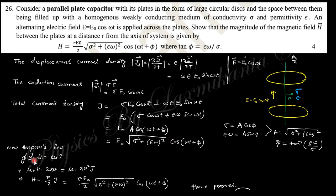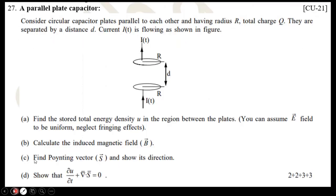The magnitude of the magnetic field H between the plates at distance r is given. The displacement current density is like that, and the conduction current is given. Total current density is the summation of these two.